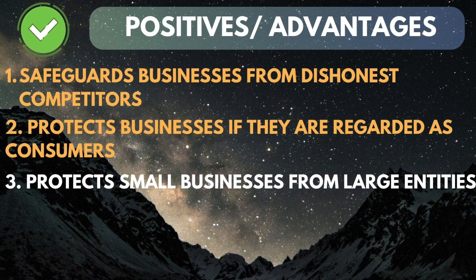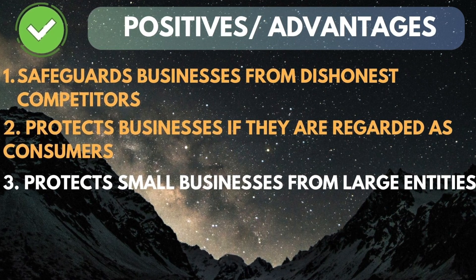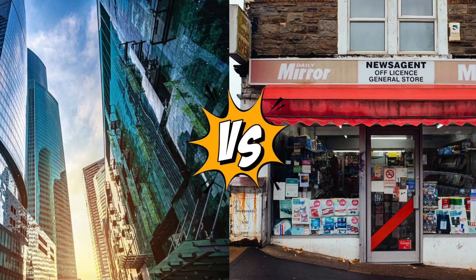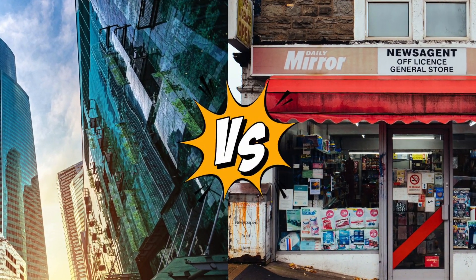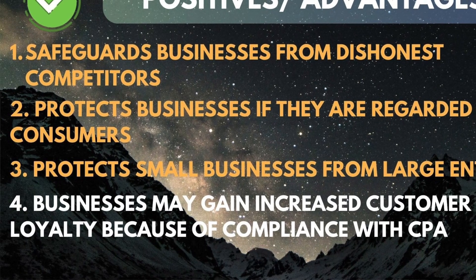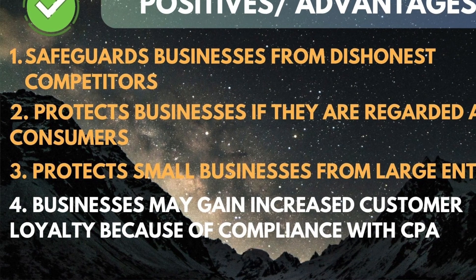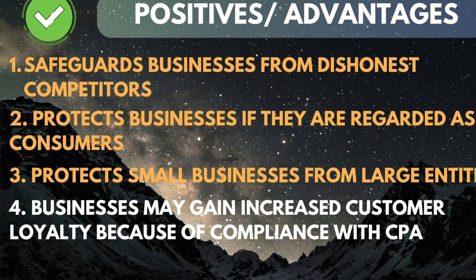Our third point: it prevents larger businesses from undermining smaller businesses. In other words, you don't have to undermine anyone in terms of business. You are not going to take advantage of a smaller business just because you are financially strong. Our fourth point: businesses may gain customer loyalty if they comply with the Consumer Protection Act — customers will be loyal.